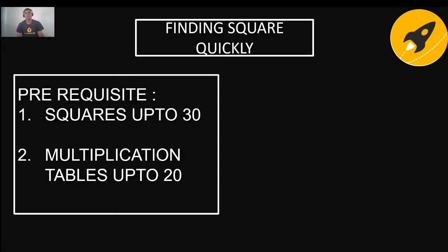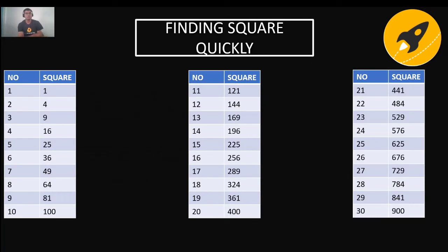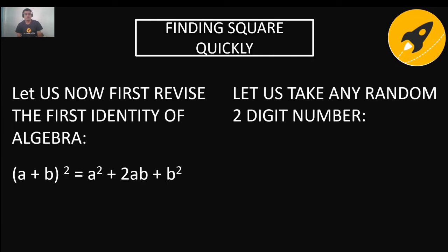Since you have completed the prerequisites — squares up to 30 and multiplication tables up to 20 — now we will apply some tricks. We first revisit the first algebraic identity: (a + b)² = a² + 2ab + b². Let us take a random two-digit number: 38². We divide 38 into two parts, a = 3 and b = 8.